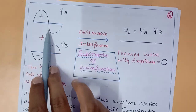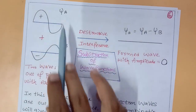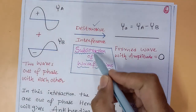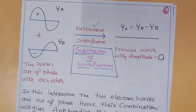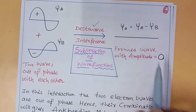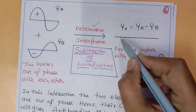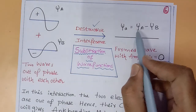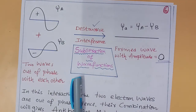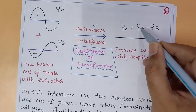Hydrogen atom A generates a wave with wave function ψ_A, and hydrogen atom B generates a wave with wave function ψ_B. These are of opposite sign. Destructive interaction causes subtraction of wave functions — they cancel each other. The resulting wave has zero amplitude. The wave function of the anti-bonding molecular orbital is ψ* = ψ_A − ψ_B. For bonding: ψ_b = ψ_A + ψ_B; for anti-bonding: ψ* = ψ_A − ψ_B.